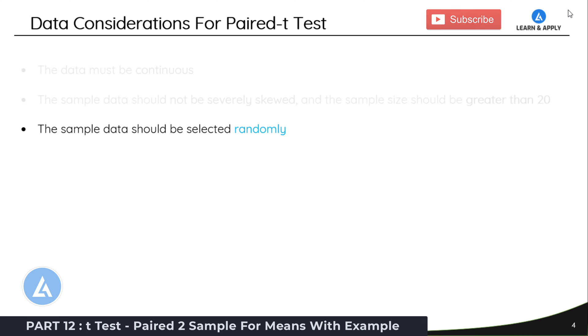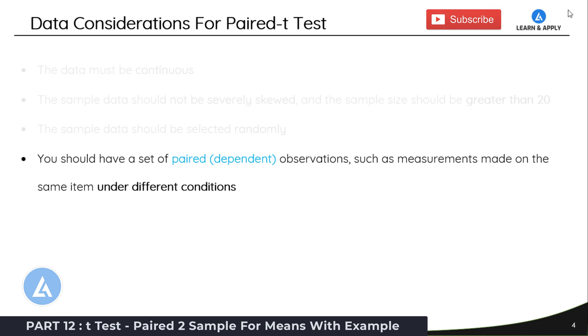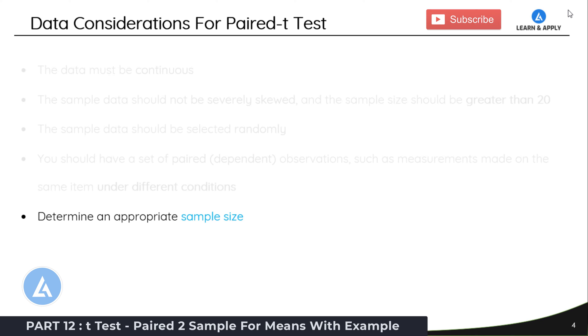Third, the sample data should be selected randomly. And the fourth one, which is also the characteristic of the Paired t-Test, you should have a set of paired or dependent observations, such as measurements on the same items under different conditions. And the last one is, determine an appropriate sample size.